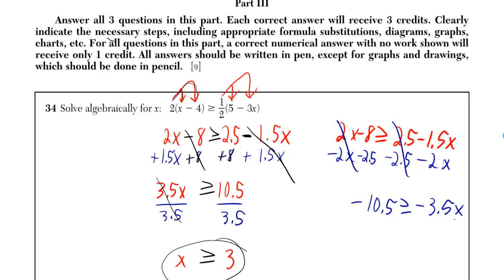But then you've got to be careful, because if you decide to now divide both sides by negative 3.5, this statement, this entire thing right here, is technically wrong, because whenever you divide by a negative, you have to switch the sign of an inequality. So now it's correct.